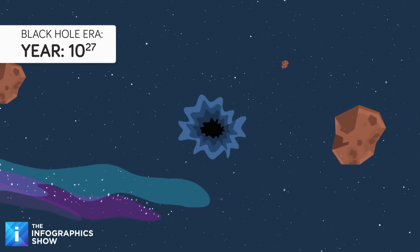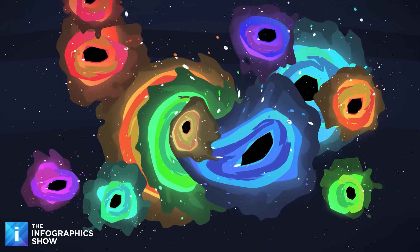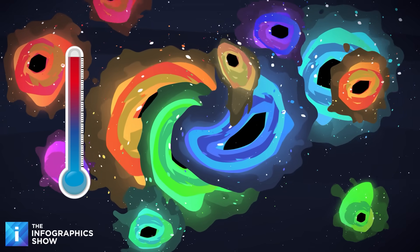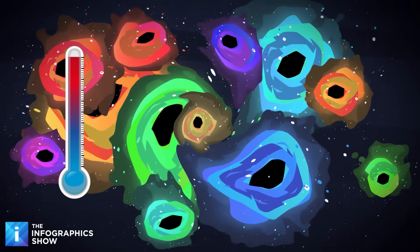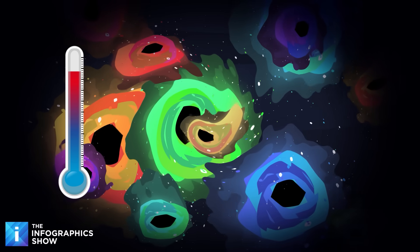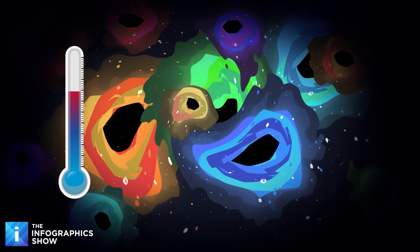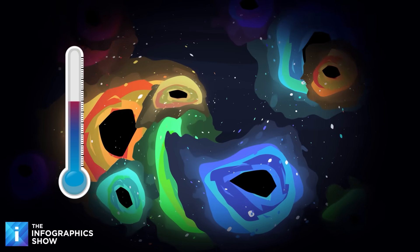Let's now fast forward to 10 octillion years and the black hole era. The universe has become unrecognizably alien. There are no stars twinkling in the sky because there is no sky and there are no stars. No planets orbit, no chemistry occurs, no complex structures can form. The temperature hovers just above absolute zero.